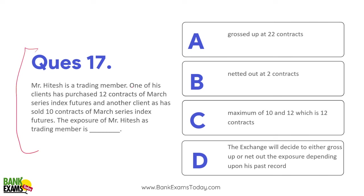Question 18: Mr. Hitesh is a trading member. One client has purchased 12 contracts of March Series Index Futures; another client has sold 10 contracts of March Series Index Futures. The exposure of Mr. Hitesh as trading member is not netted — it is grossed up. So his total exposure is 22 contracts (12 + 10).